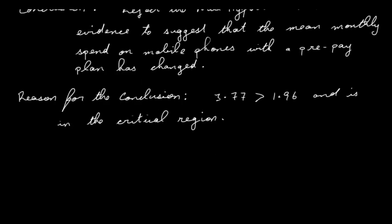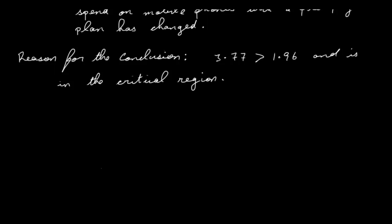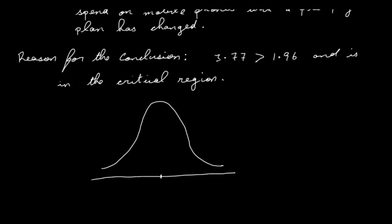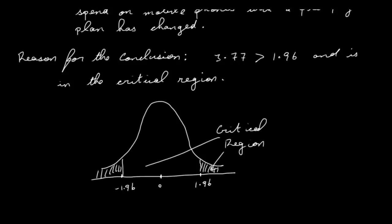You could take that a little bit further and draw a small sketch: mark 0 at the centre, then 1.96 and negative 1.96 on either side — these shaded outer regions are the critical regions. And that's really it for this question.